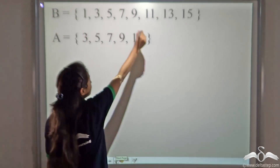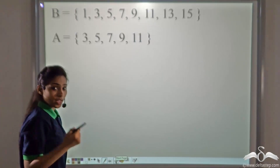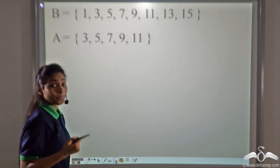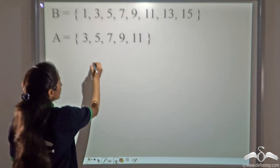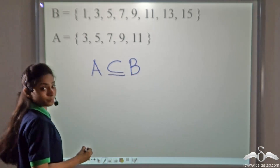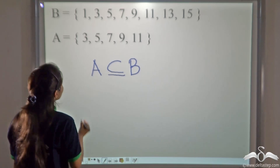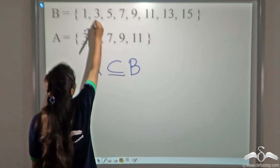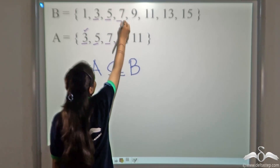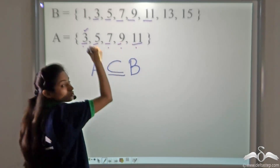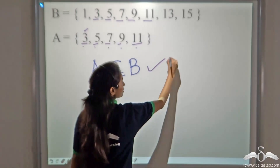Now B is a set with certain numbers and A is a set with certain numbers. Can you tell me whether A is a proper subset of B? A set must fulfil two conditions to be a proper subset. The first condition is that it should be a subset of B — every element of A should be present in B. Checking: 3 is present, 5 is present, 7, 9, 11 — each element of A belongs to B as well. So A is a subset of B, and this first condition is fulfilled.